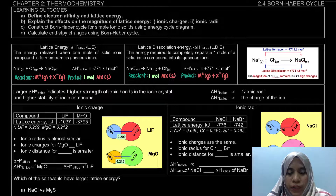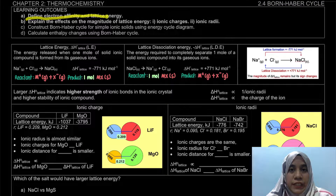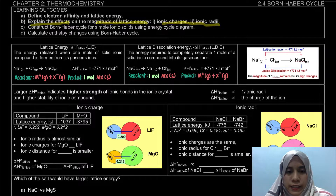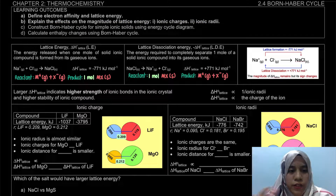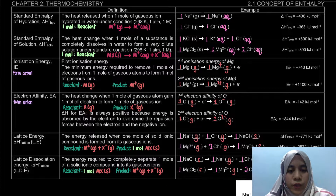Assalamualaikum and hello everyone, welcome to the video for Topic 2.4 on the Born-Haber cycle. In this video, we are going to learn to define electron affinity and lattice energy, and explain the effect of ionic charge and ionic radii on lattice energy. For the definitions, we need to look at our notes on page 3 from Topic 2.1, so here we will do a recap.